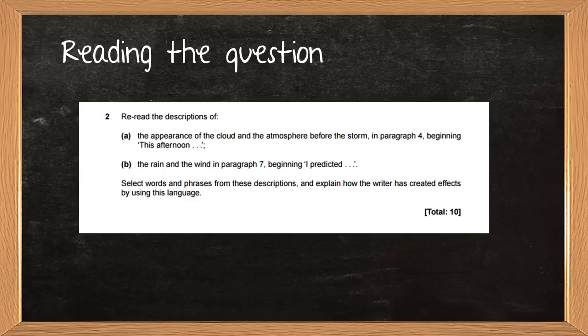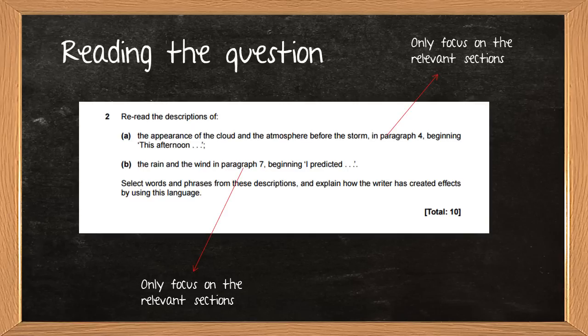What's nice about this question is that it always follows the same format. It will always start with re-read the descriptions of, and part A will point you to one paragraph, part B will point you to one paragraph. Then the wording of the main part of the question is always the same: select words and phrases from these descriptions and explain how the writer's created effect by using this language.